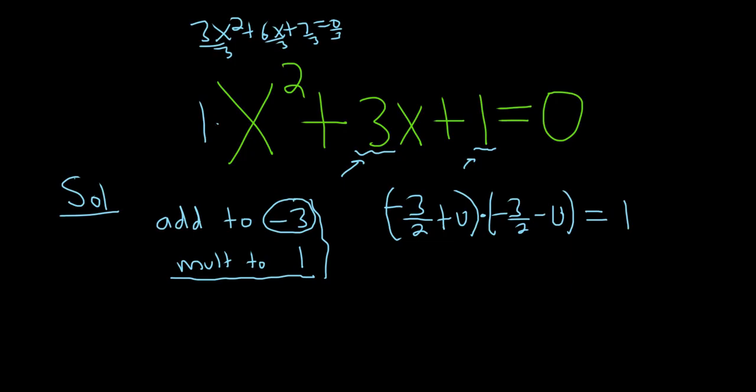So step 1, as a recap, you need two numbers that add to the opposite of this. Boom, there it is. Then you need multiply to 1. Boom, there it is.